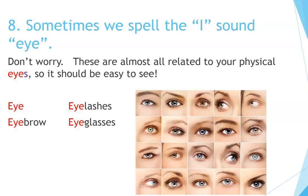Number eight. Sometimes we spell the I sound E-Y-E. Don't worry — these are almost all related to your physical eyes, so it's easier to remember. The words should be easy to see: eye, eyebrow, eyelashes, eyeglasses.